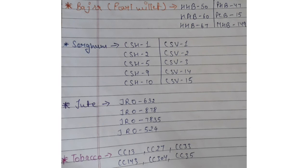43 CC, 33 CC, 35 CC — these are the sugarcane variety codes. This is an easy trick to remember them. Please share this with your friends. Thank you.